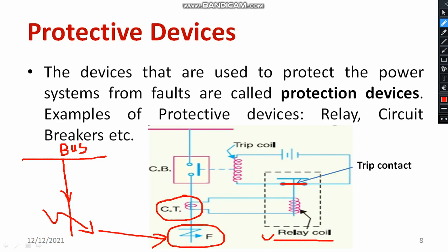Initially the tripping contact is in a normally open condition. After the relay coil is energized, due to the electromagnetic attraction principle, the contact closes. Once the contact is closed, the entire supply is applied and continuous current flows through the trip coil, causing the trip coil to get energized.